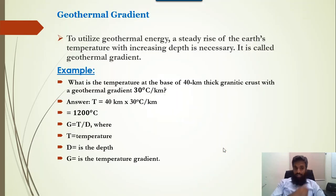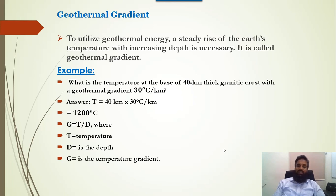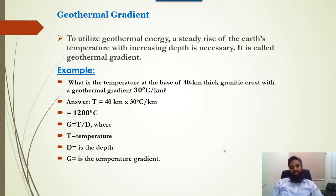To utilize geothermal energy, a steady rise of the earth's temperature with increased depth is necessary — this is called the geothermal gradient. For example: what is the temperature at the base of a 40 km thick granitic crust with a geothermal gradient of 30 degrees centigrade per kilometer? The answer is 40 km multiplied by 30, which equals 1200 degrees centigrade. The gradient formula is G = T / D, where T is temperature, D is depth, and G is the temperature gradient.